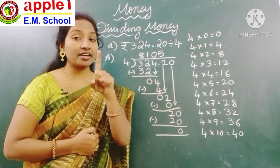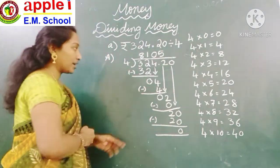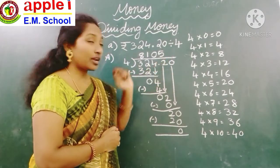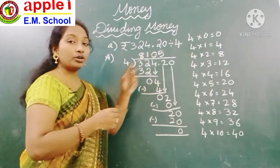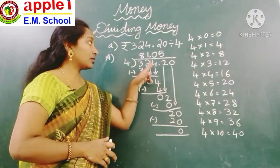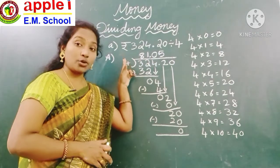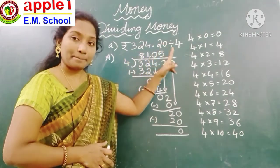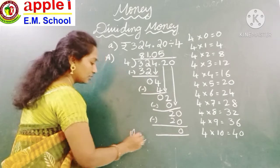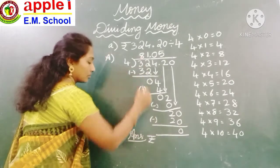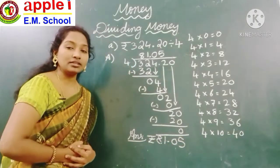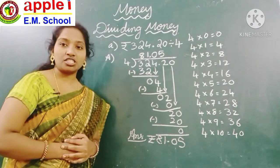Now, how do we write the answer? The quotient is the answer. In the dividend, there is a point before the last two digits, so in the answer you also have to put the point before the last two digits — count 1, 2 from the right. The digits before the point are rupees and after the point are paise. So the answer is 81 rupees 5 paise.